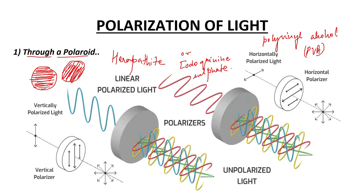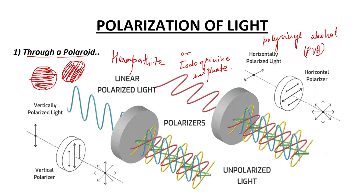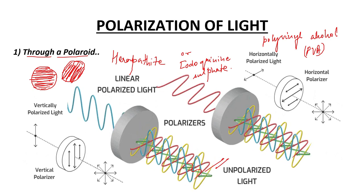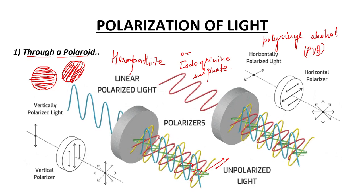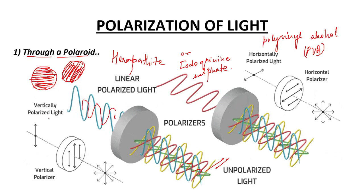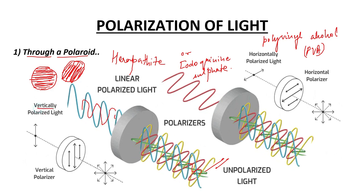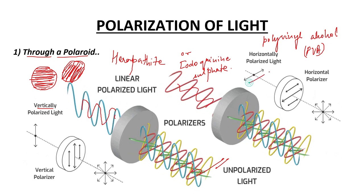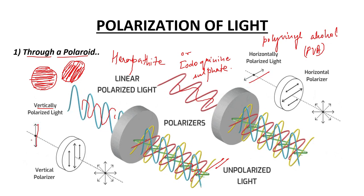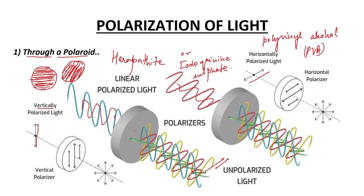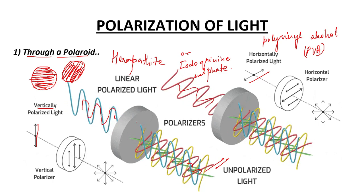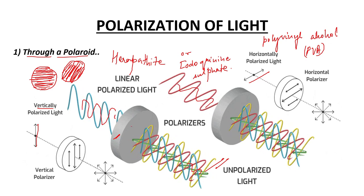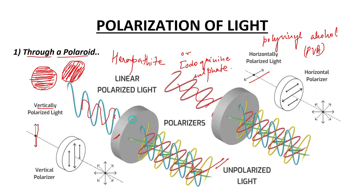You can see here that as this unpolarized light passes through the Polaroid, it is polarized in a particular plane. This blue ray is polarized in a vertical direction, and this red wave is polarized in a horizontal direction. So if this polarizer is polarizing the light in the vertical direction, the crystals must be arranged perpendicular to it.